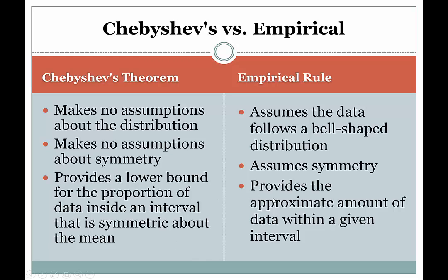With the empirical rule, we get more precise, approximate answers. We know the approximate amount of data within a given interval, and we also have more flexibility on the interval — it doesn't have to be perfectly symmetric around the mean. However, there are limitations on the number of standard deviations we can work with, because it only uses integer standard deviations: 1, 2, or 3 below or above the mean. So we have a limited number of cases, but the interval doesn't have to be symmetric around the mean.